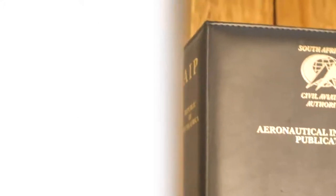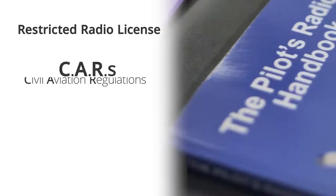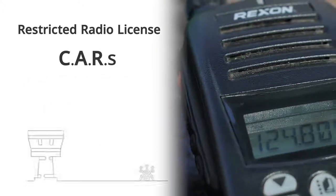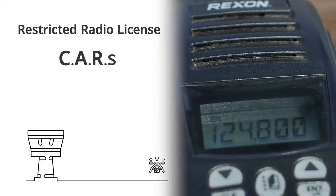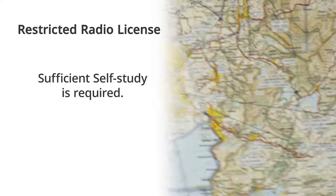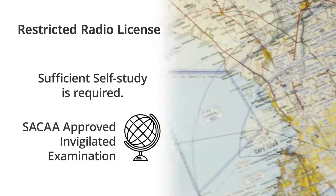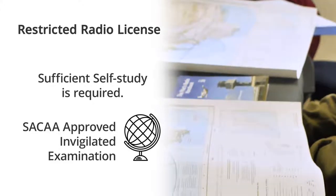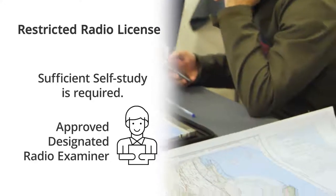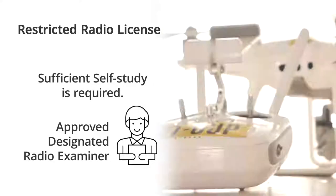Included in the course is the training towards the restricted radio license. The Civil Aviation Regulation stipulates that every remote pilot must be the holder of a restricted radio operator's license, because the remote pilot will operate the drone in airspace that is shared with other aircraft. The theoretical instruction will be conducted over a period of two days, after which the student will be required to self-study with the assistance of the instructor. The radio exam is an online examination written at a South African CAA approved examination center. Upon successful completion of the examination, the student will be prepared for a practical test with an approved designated radio examiner.